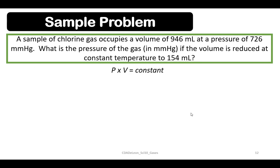Pressure multiplied by volume is equivalent to constant, so we are using the general formula of Boyle's Law. Now let's substitute the given: initial pressure of 726 mmHg, initial volume of 946 mL. The unknown given is final pressure, and the final volume is 154 mL.